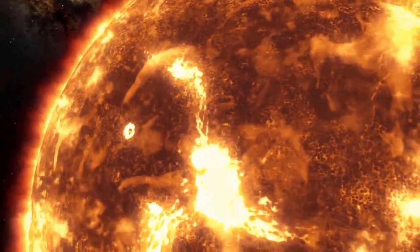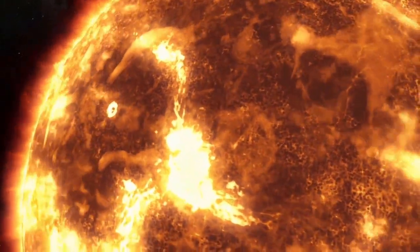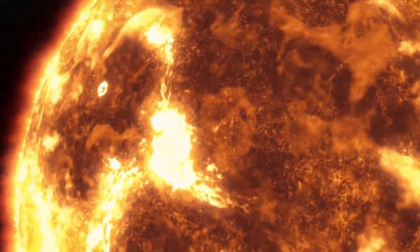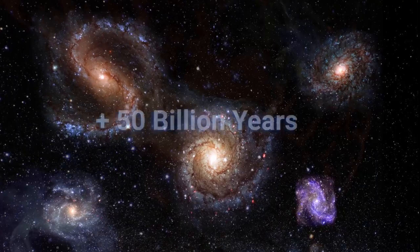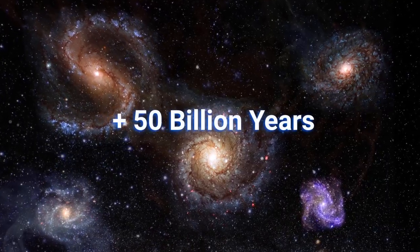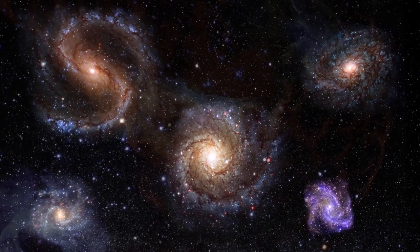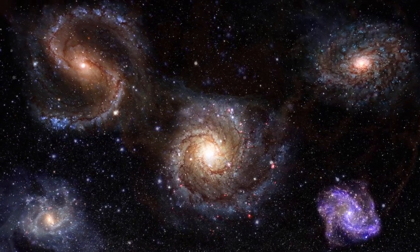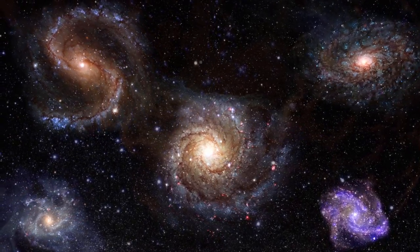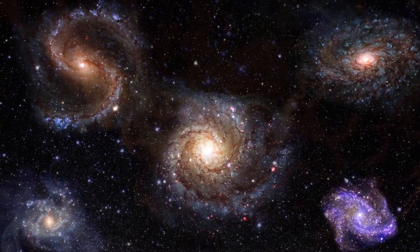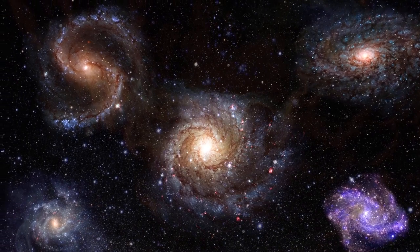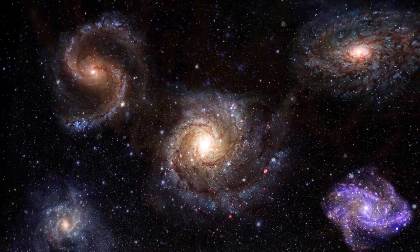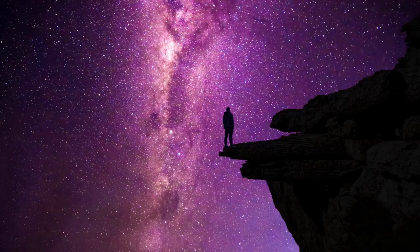In about 50 billion years, the local group — a cluster of galaxies that includes the Milky Way, Andromeda, and other smaller galaxies — will merge into a single large elliptical galaxy due to gravitational interactions.